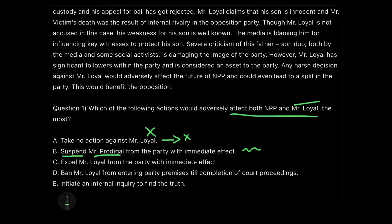Option C says 'expelling Mr. Loyal from the party with immediate effect.' The proper noun here is Mr. Loyal. Expelling him from the party sounds like a permanent decision. If we expel Mr. Loyal, the passage already tells us it would adversely affect the future of NPP and could lead to a split — because he has many significant followers. So this directly affects Mr. Loyal as well as the party. This sounds like the correct answer, but I won't finalize it until I've gone through all options.